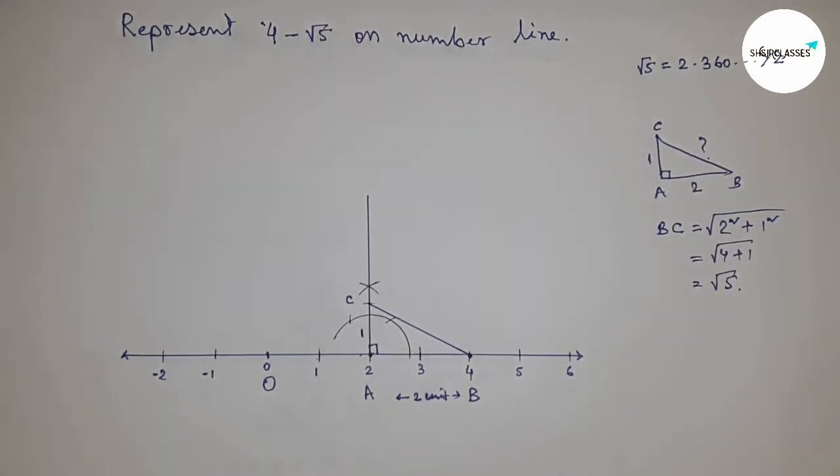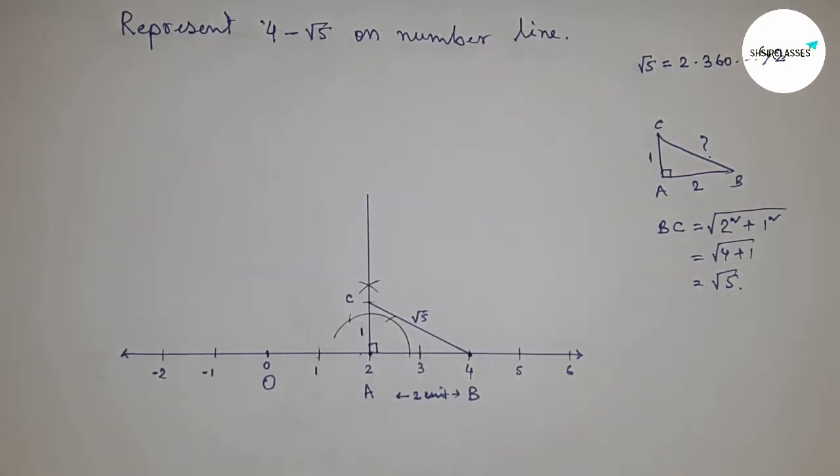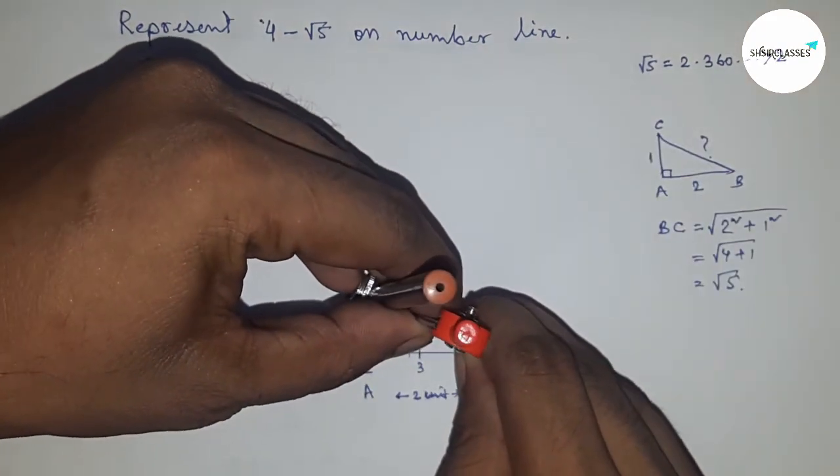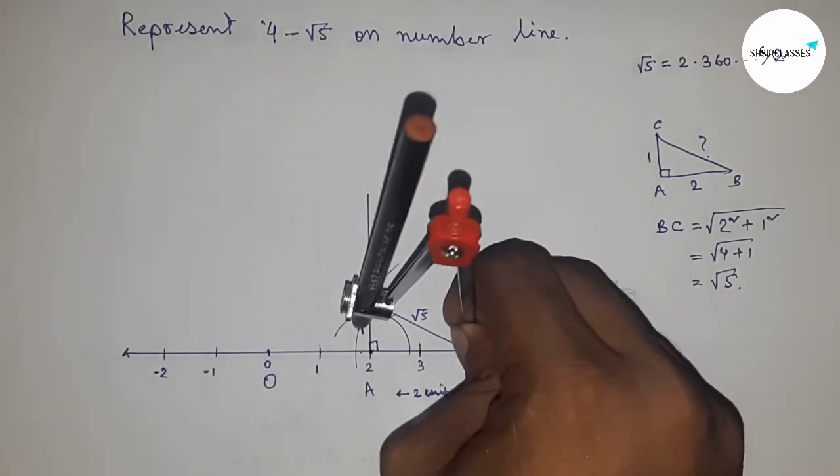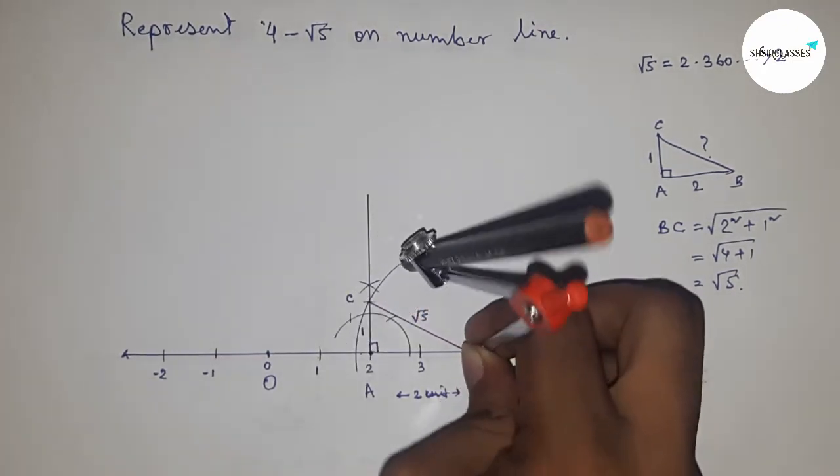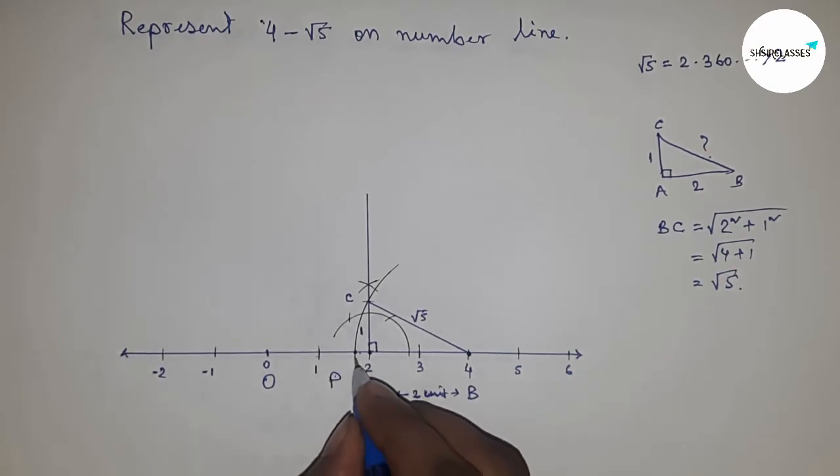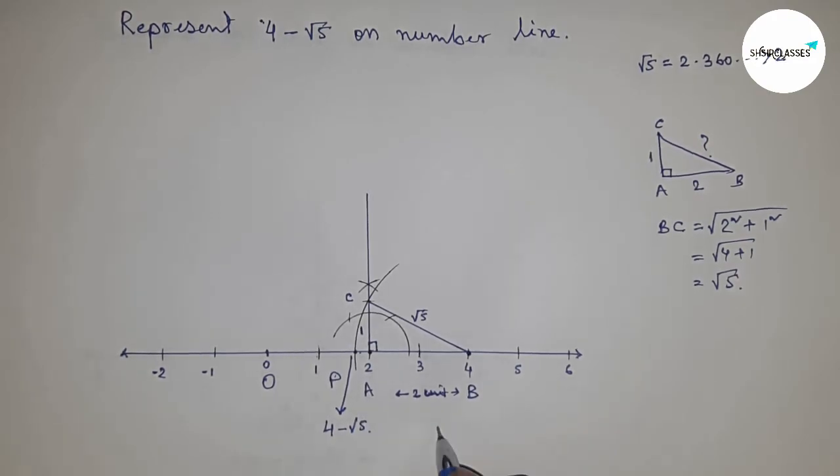So this is root 5. Next, take the distance BC equal to root 5 using the compass. Draw an arc which cuts the number line at point P. If you subtract this part from 4, then we get 4 minus root 5.